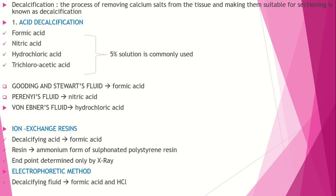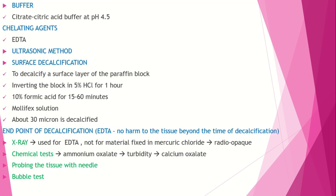Decalcifying fluids include formic acid and hydrochloric acid. Buffers can also be used — a common example is citrate/citric acid buffer at pH 4.5. Chelating agents are also used; one of the most important is EDTA (ethylene diamine tetraacetic acid), where the basic principle is chelation of calcium.